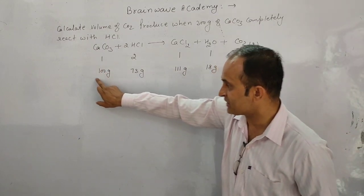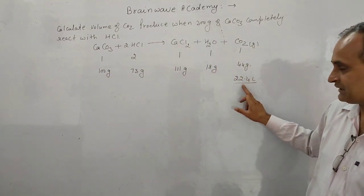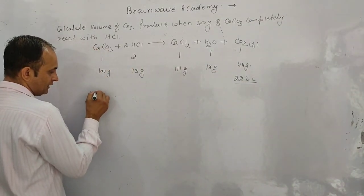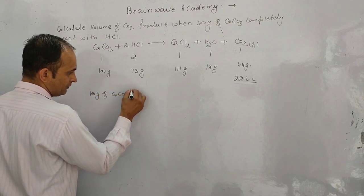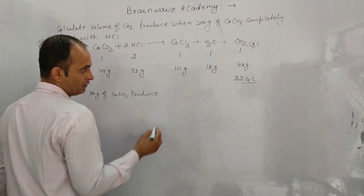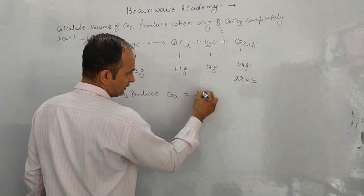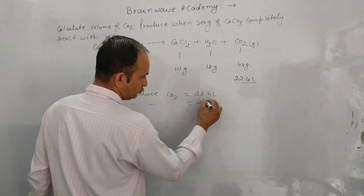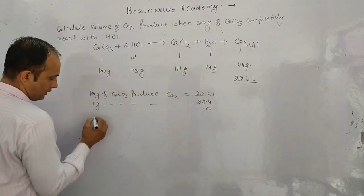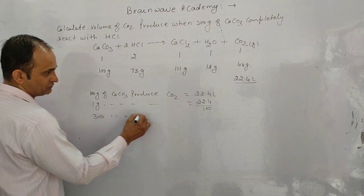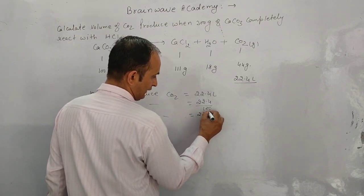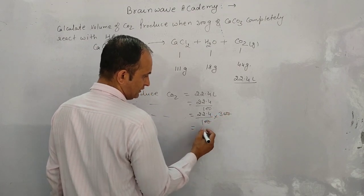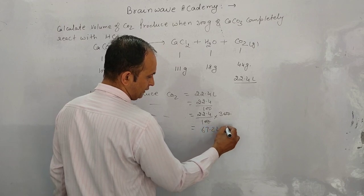From the balanced chemical equation, 100 g of CaCO3 produces 22.4 liters of CO2. Using the unitary method: 1 g of CaCO3 produces 22.4/100 liters. Therefore, 300 g of CaCO3 produces (22.4/100) × 300 = 67.2 liters of CO2.